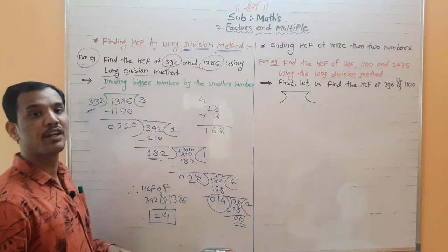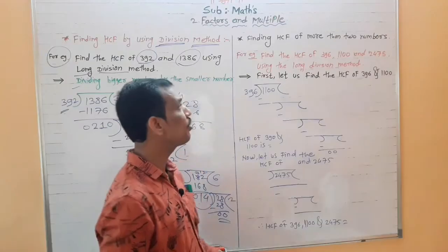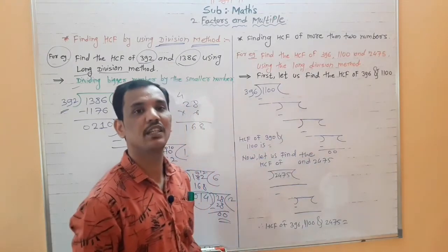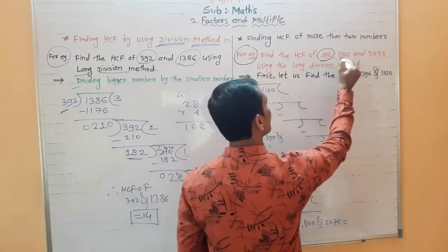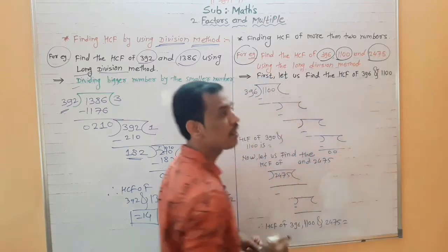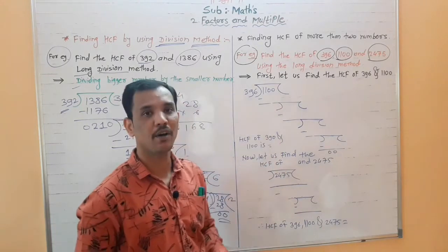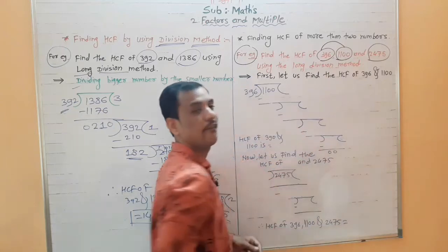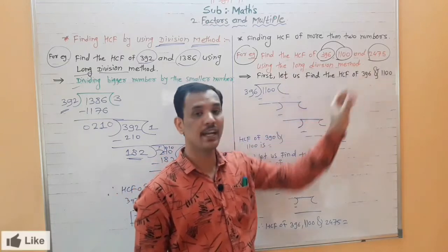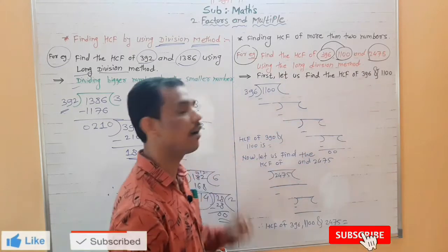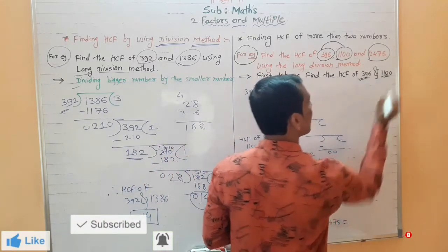Now, how to find HCF of 3 numbers. Find the HCF of 396, 1100, and 2475 using the long division method. You can follow 3 techniques: first, find HCF of the first 2 numbers. When you get that HCF, take it and your third number and find their HCF — that gives your final HCF of all three numbers. Let us first find the HCF of 396 and 1100.